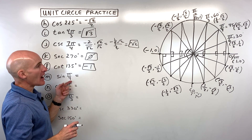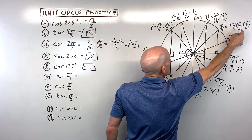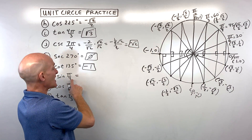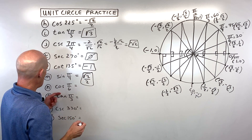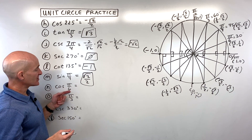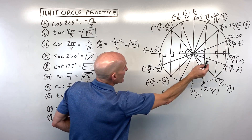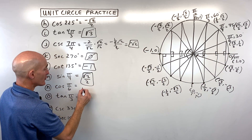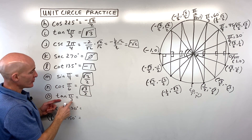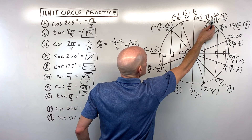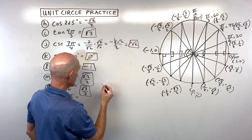Letter M: sine of π/4. π/4 is 45 degrees, a first-quadrant angle. Sine is the y-coordinate: √2/2. Letter N: cosine of π/6. π/6 is 30 degrees — substitute 180 for π: 180/6 = 30. Cosine is the x-coordinate: √3/2. Letter O: tangent of π/3. π/3 is 60 degrees. Tangent is y over x; the 2s cancel in the denominator, giving √3.